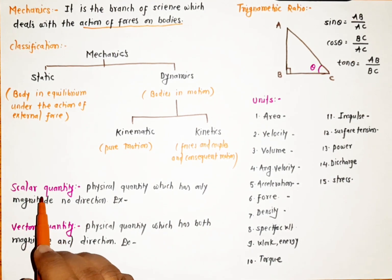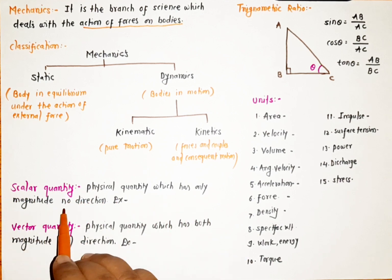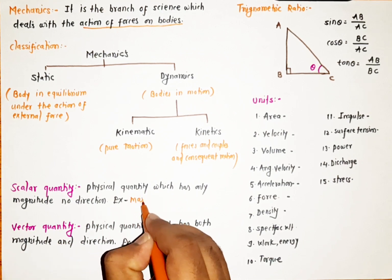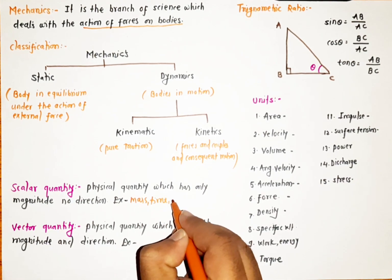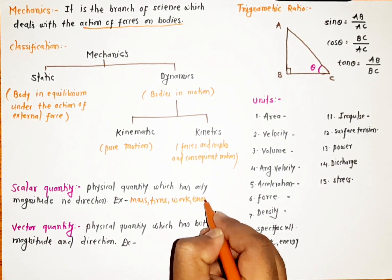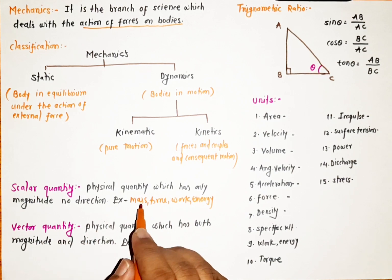Then there is another basic concept which is scalar quantity. Scalar quantity is a physical quantity which has only magnitude, no direction. Here are some examples: mass, time, work, energy. These are examples of scalar quantities which have magnitude but no direction.